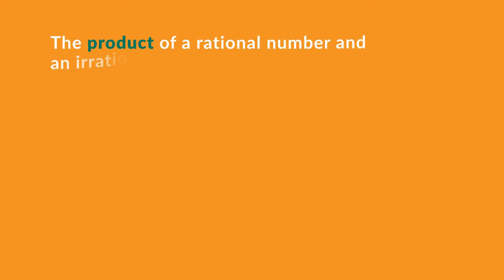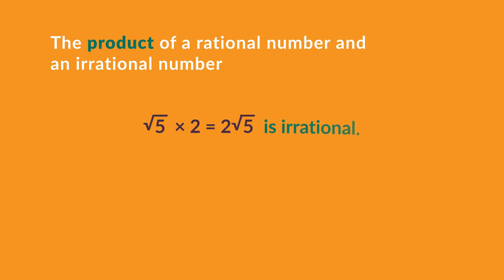Let's see what happens when we find the product of a rational number and an irrational number. The square root of 5 times 2 is equal to 2 root 5, an irrational quantity. So can we conclude that the product of a rational number and an irrational number is always irrational?